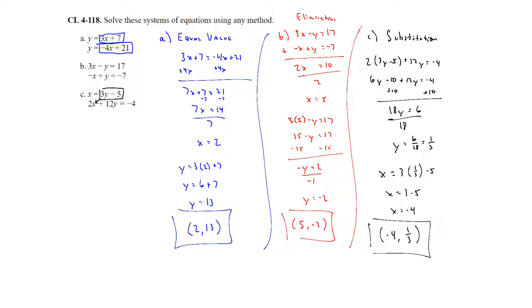So those three parts showed all the different methods — equal value, elimination, and substitution — as well as all the different types of solutions you can get.